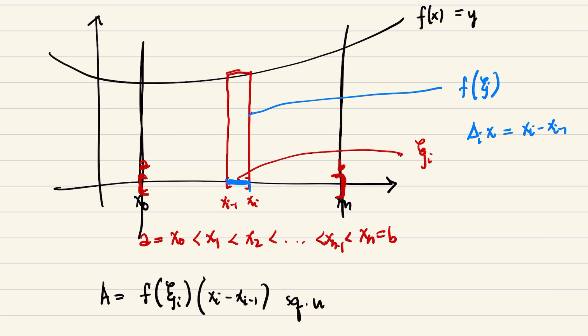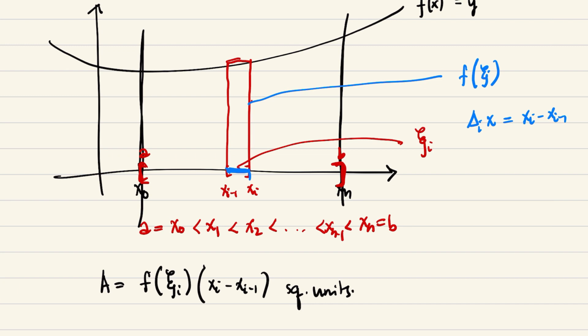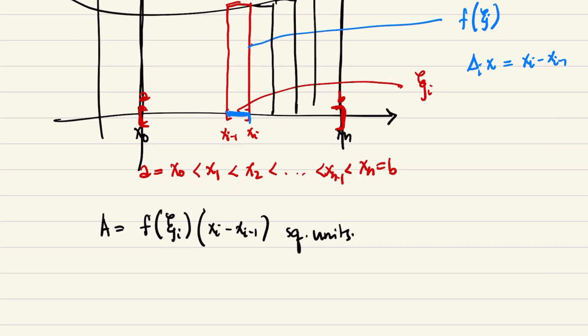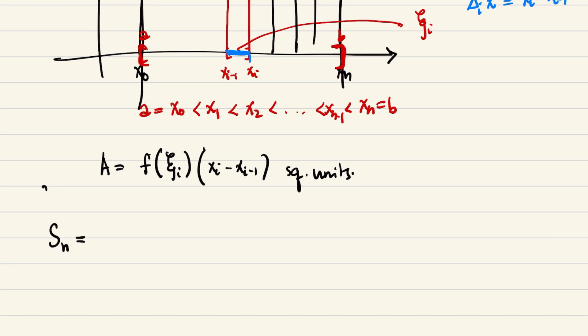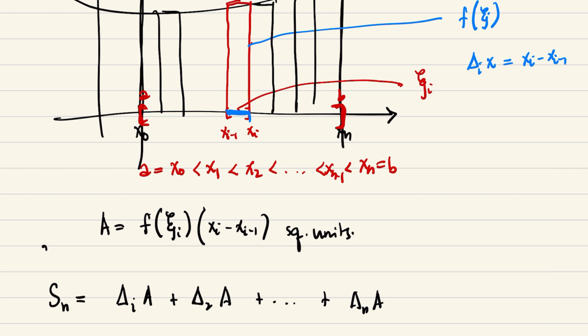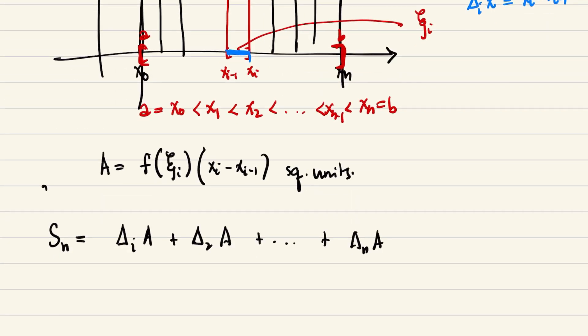You are actually partitioning this region. That means we have many rectangles to partition the entire region. So the sum s sub n, which is the area of the region, is given by delta sub 1 a plus delta sub 2 a, and so on, until delta sub n a. If you take the sum, this equals the summation of f of psi sub i delta sub i x, where i ranges from 1 to n. So n partitions of your area.